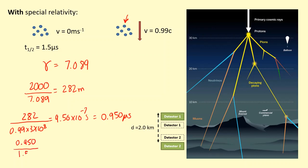So how much of a half-life is it? If you do 0.950 divide by the half-life, you get 0.633 half-lives. So if there's a hundred percent arriving here, if you take the hundred percent and multiply by half to the power of the number of half-lives...